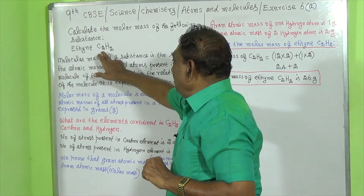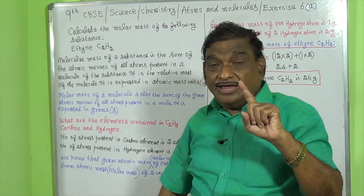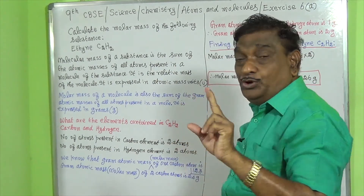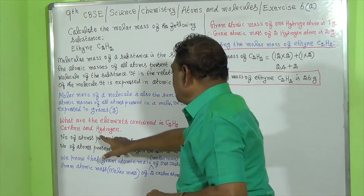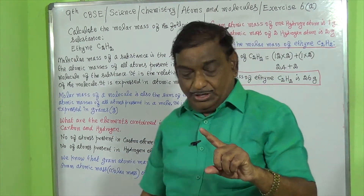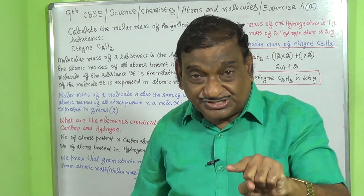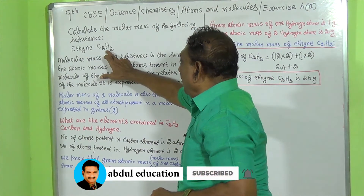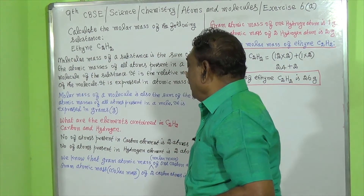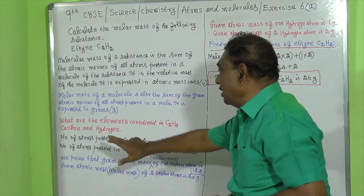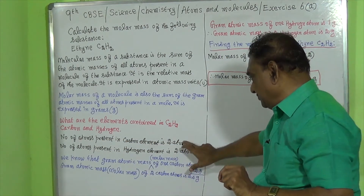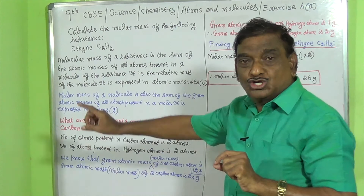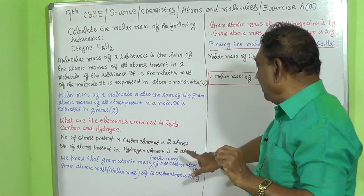So in this case, the chemical substance is a compound. What are the elements contained in this chemical substance, that is ethyne? Two elements are present. One is carbon, the other is hydrogen. We should know how many atoms are present in carbon and how many atoms are present in hydrogen. Two atoms are present in carbon — the number of carbon atoms is two. Similarly, the number of atoms present in the hydrogen element is also two.